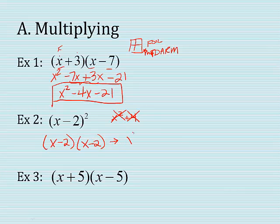First terms is x squared. Outer minus 2x. Inner minus 2x. Last plus 4. So again, I can combine my middle terms to minus 4x plus 4. All right. There it is.